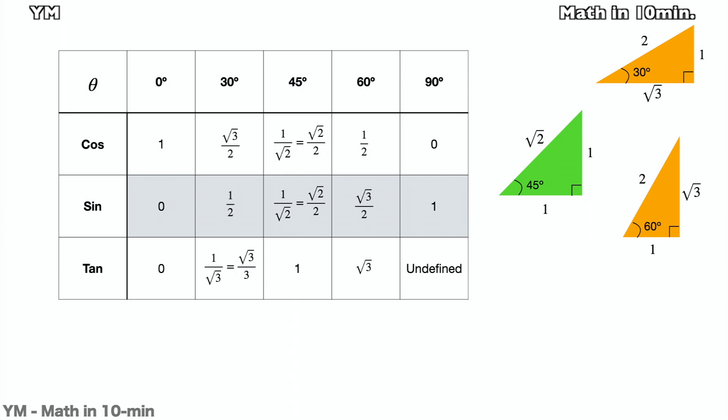This chart is also recommended to remember. It indicates which value each trigonometry has on some specific angles. For example, sine 30 degrees is 1 over 2. Except 0 degrees and 90 degrees, the other values can be found from the right triangles on the right side. These are the right triangles I mentioned in the previous slide.